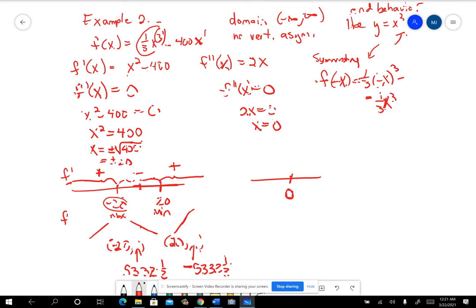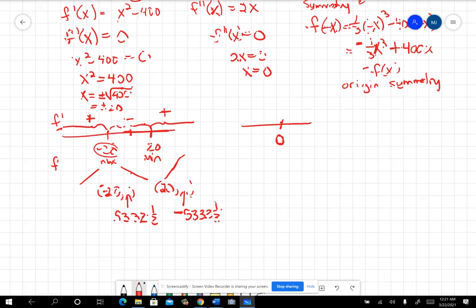And then here, where you had a negative going in for the x, you wind up now with positive 400x. And this is really the opposite of f of x. So we're going to find we have origin symmetry. And you'll see what that means when we get finished.